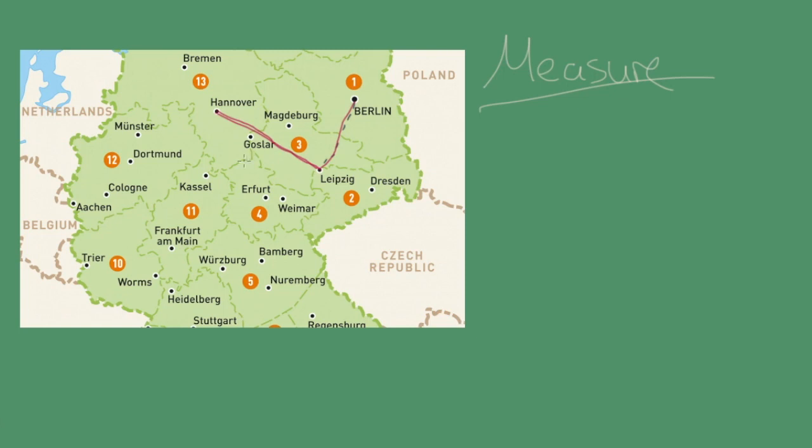So let's say this distance here, that's, I don't know, 100 miles. I don't know whether it is, but we'll just say it. And this whole distance to Berlin from Hanover through to Leipzig to Berlin, that's 180.